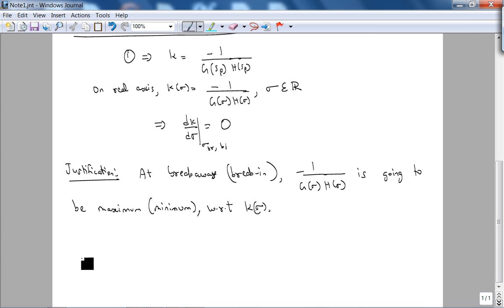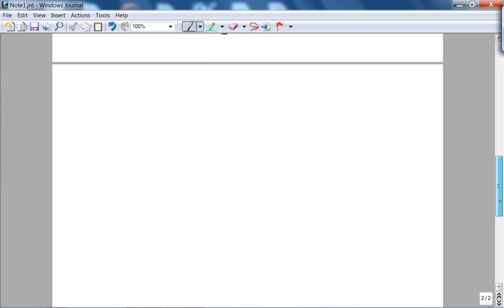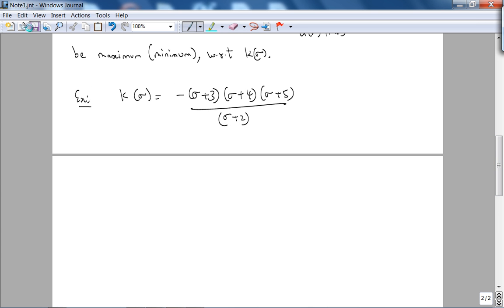For our example, k as a function of sigma is going to be negative 1 over (σ+3)(σ+4)(σ+5) over (σ+2). This implies we are going to take the derivative symbolically. You could do that using a TI-89 for example, or you could just use the quotient rule.